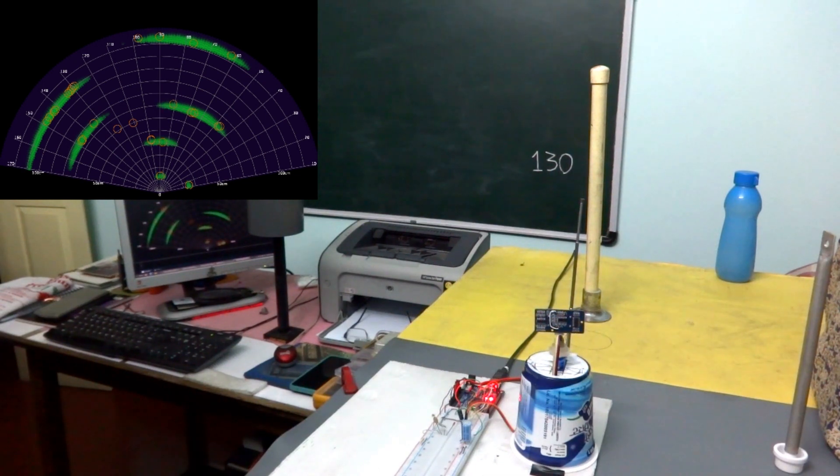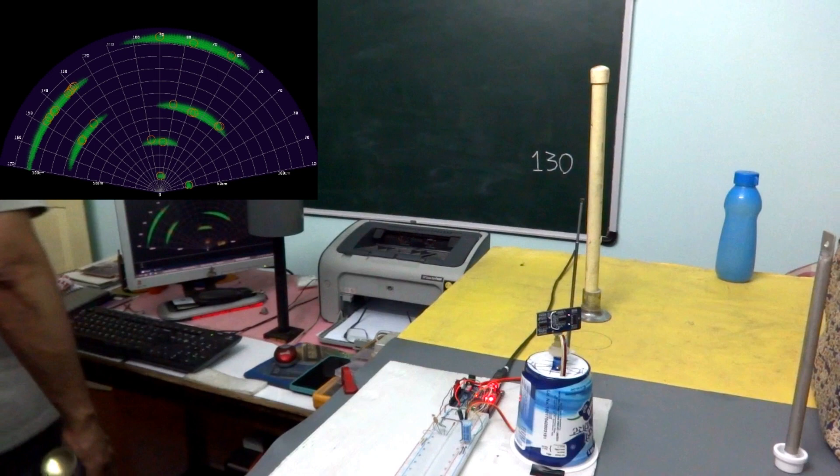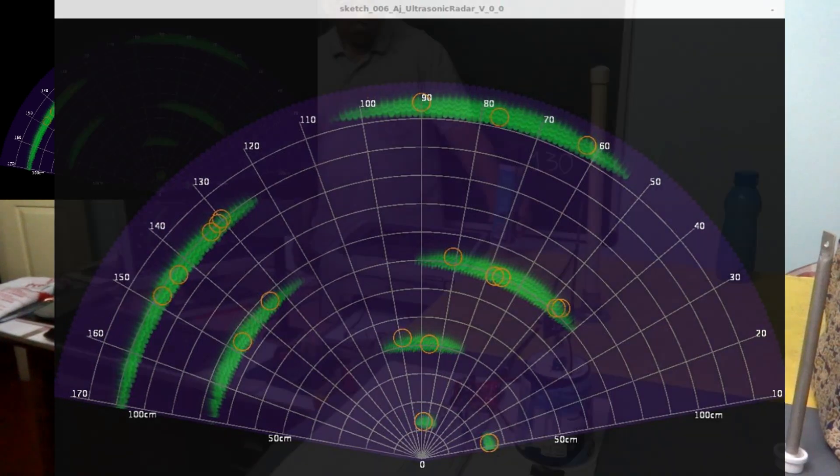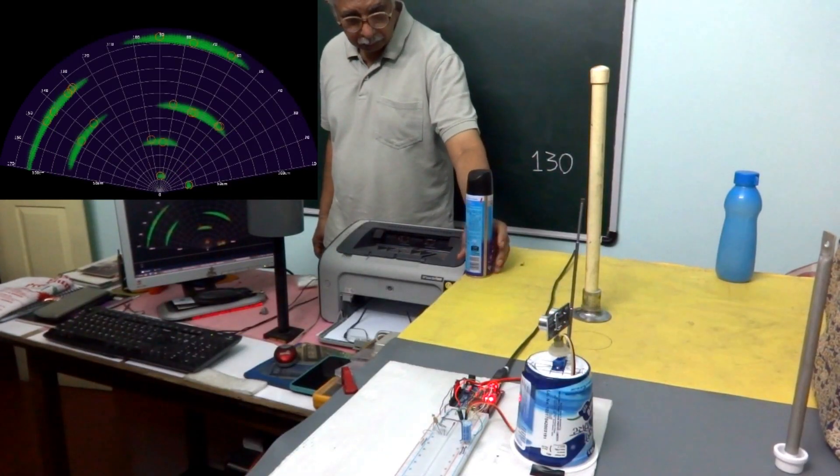By this time the scan is now coming back to the old location of the can which we had removed, and we can see that the position locations have now been erased. We now put back the can.